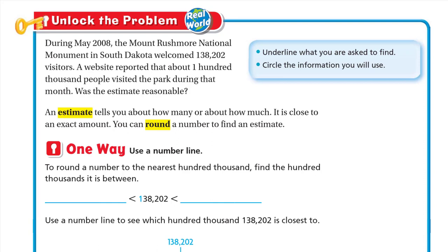Here he says underline what you are asked to find, so we'll underline 'was the estimate reasonable.' Circle the information you will use — we will use the number 138,202 and also 100,000 people. An estimate tells you about how many or about how much; it is close to an exact amount. You can round a number to find an estimate.